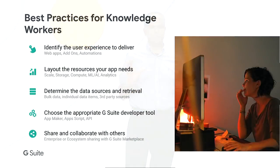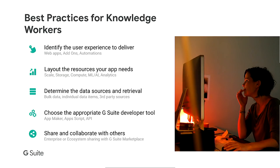So far I've given you an overview of the different G Suite developer tools and industry shifts. I want to summarize some best practices learned from many customers. I've divided these by two personas: the knowledge worker and the IT administrator. If you're a knowledge worker looking to build an app, your first step should be to identify what kind of experience your app needs to deliver — is it a web app accessed via a URL, an add-on available in the G Suite side panel, or an automation that automatically does tasks in response to a system event?